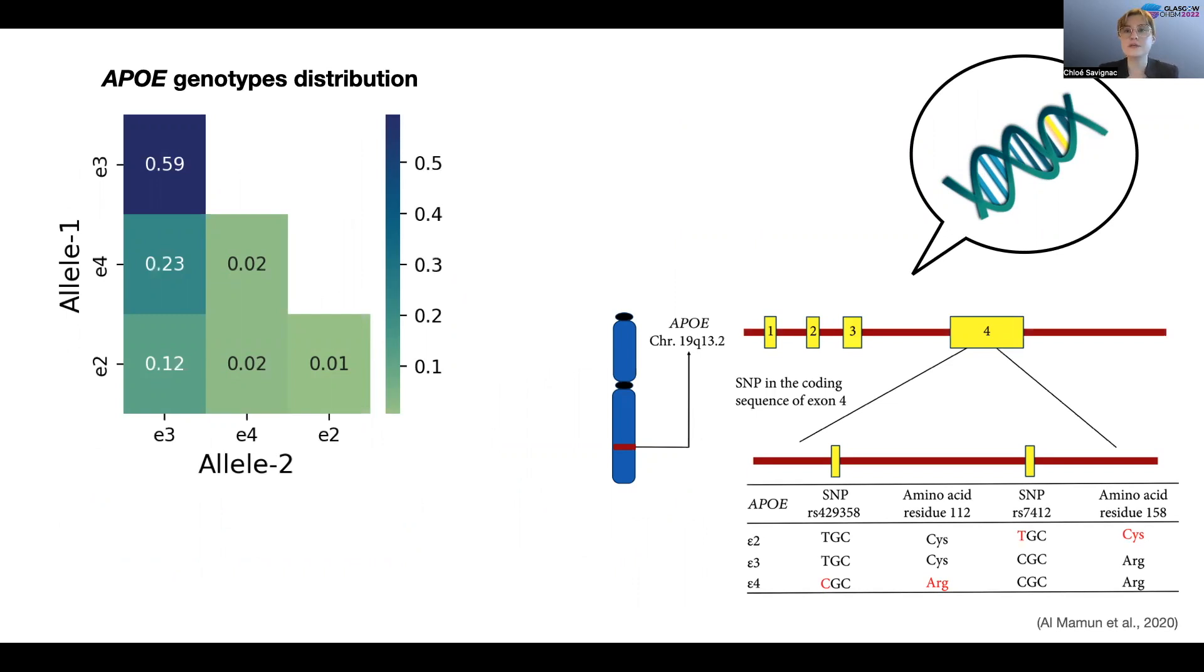E2 homozygotes are associated with decreased risk of developing dementia but have a prevalence of less than one percent in the general population. In contrast, E4 homozygotes are associated with increased risk of developing dementia and have a prevalence of around two percent. The rarity of both of these genotypes means that they are seldom investigated in traditional small to medium-sized imaging samples.